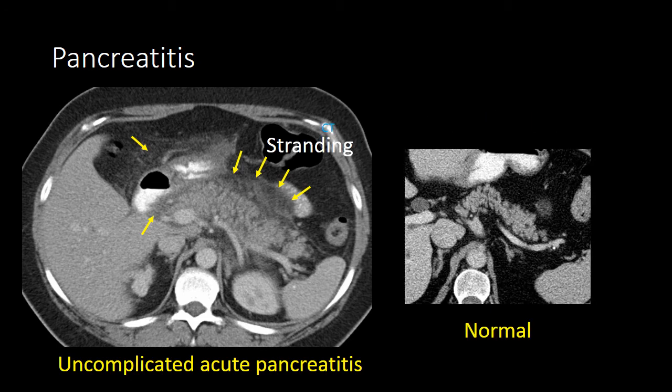This is a normal pancreas for comparison, where you can see the clean fat around the pancreas, as opposed to the fat stranding on the initial case.